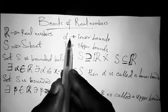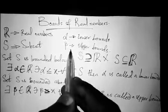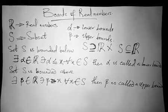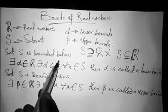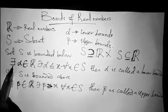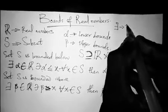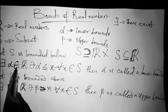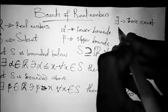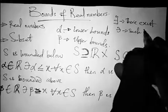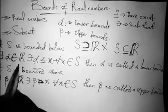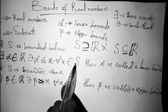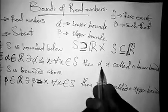We'll also be using alpha as a lower bound and beta as our upper bound. A set S is said to be bounded below if there exists — this sign means 'if there exists' — alpha in R, that is your real number, such that — this sign means 'such that' — alpha is less than or equal to x for all x in S, where S is a subset of R. Then alpha is called a lower bound.